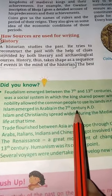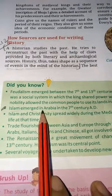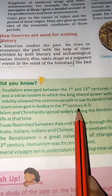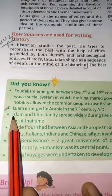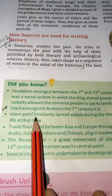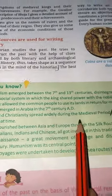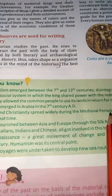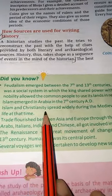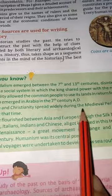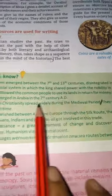Number two: Islam and Christianity spread widely during the medieval period. These are the two major developments that took place in the world during the medieval period.